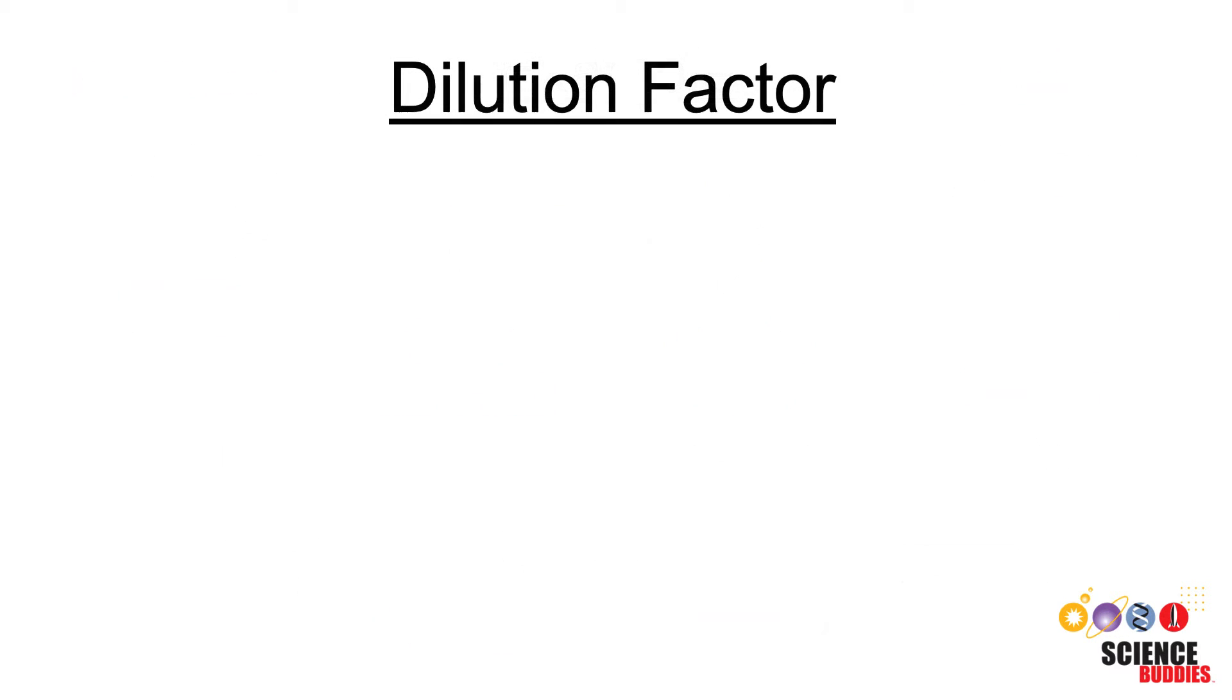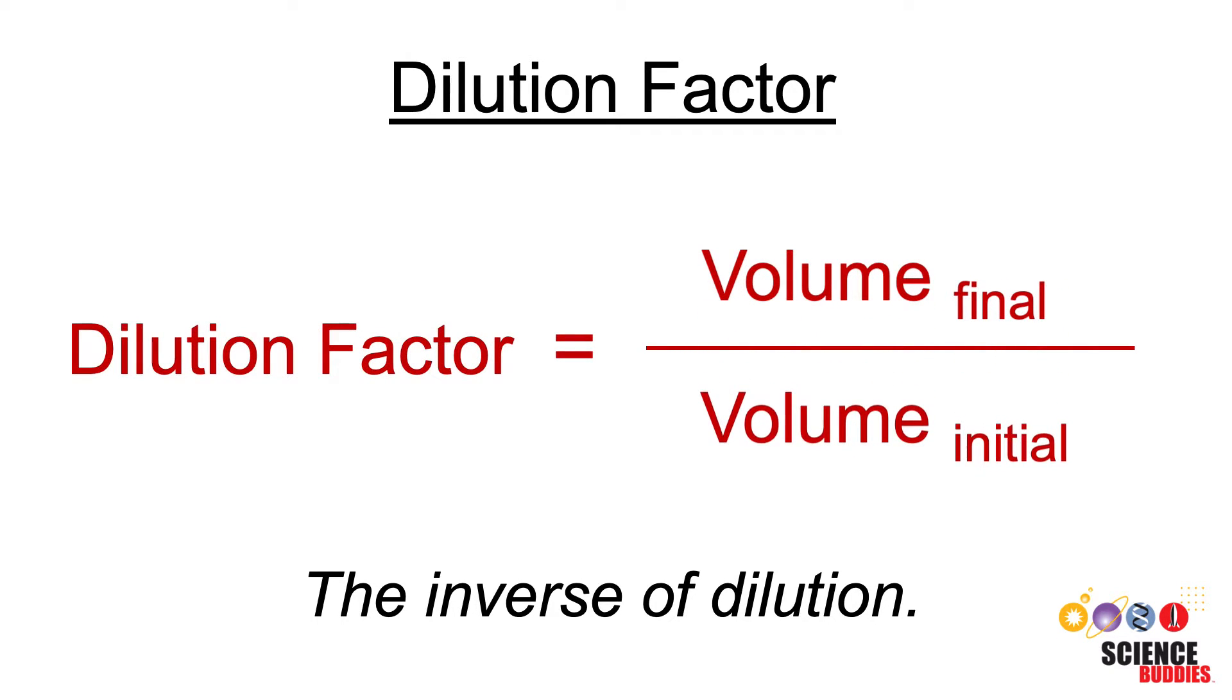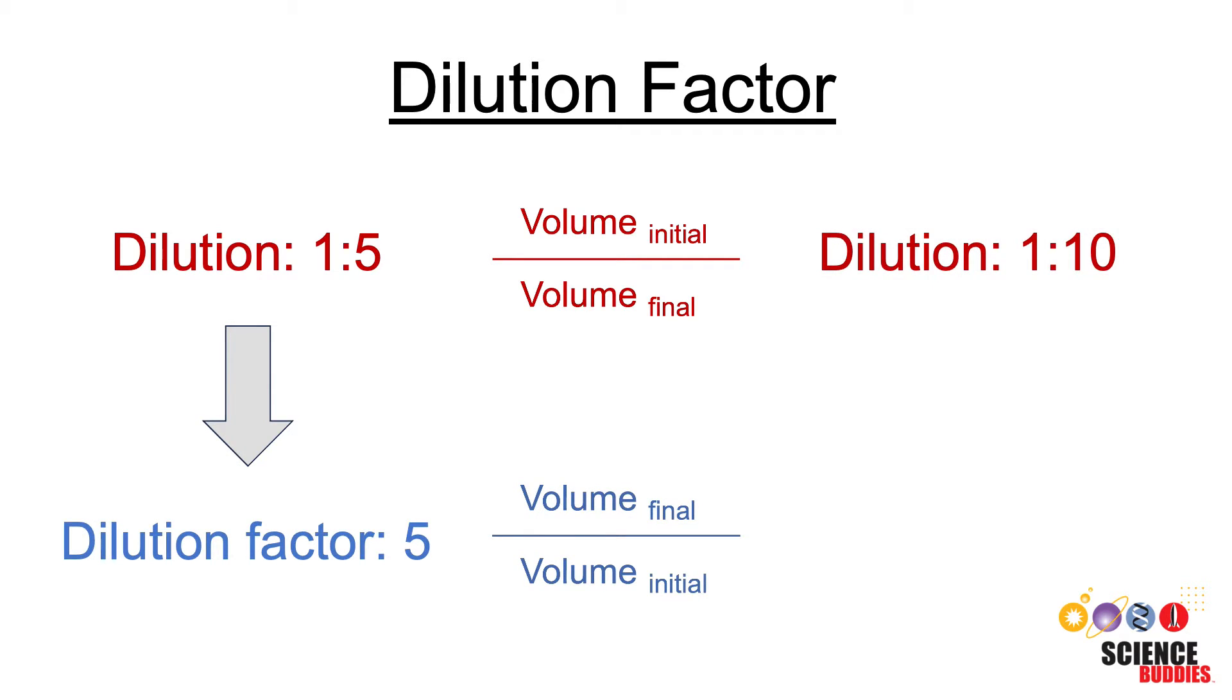Another way of talking about dilutions is the dilution factor. The dilution factor is the inverse of the dilution and tells you the ratio of the final dilution volume to the initial volume of the concentrated solution. A 1 to 5 dilution has a dilution factor of 5 and a 1 to 10 dilution has a dilution factor of 10.